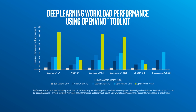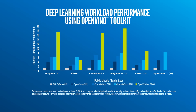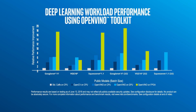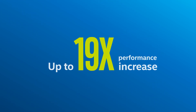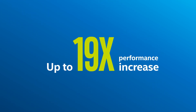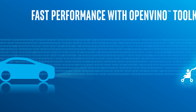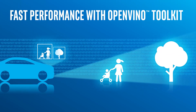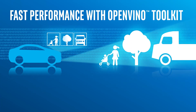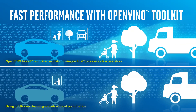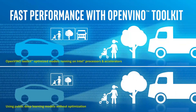Optimizations with the OpenVINO Toolkit can increase deep learning workload performance up to 19 times higher using Intel computer vision accelerators compared to public deep learning models.